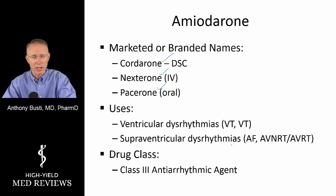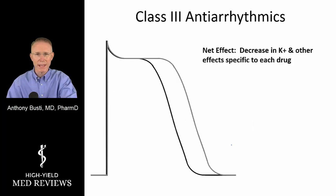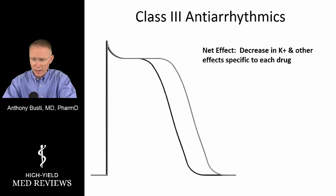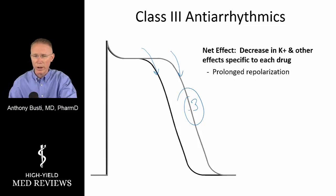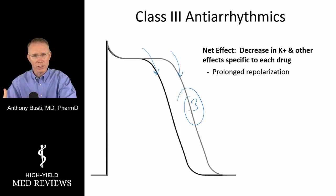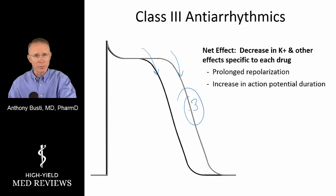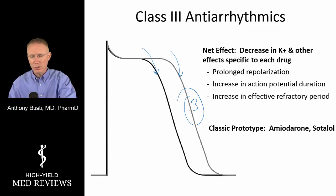Looking at its drug classification, amiodarone is considered a class III antiarrhythmic agent, meaning it predominantly works on phase III of the action potential. Under the influence of the medication — shown as the gray line — phase III is primarily being affected: we are prolonging the repolarization process. That means we're making the ventricular relaxation phase take longer, making it harder for that ventricular myocyte to receive another action potential, which can hopefully reduce ventricular dysrhythmias. Classic class III agents include not only amiodarone but also sotalol.